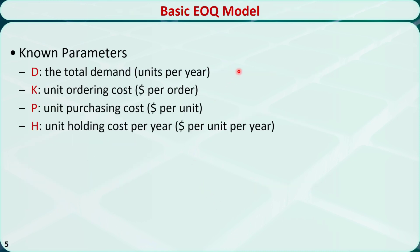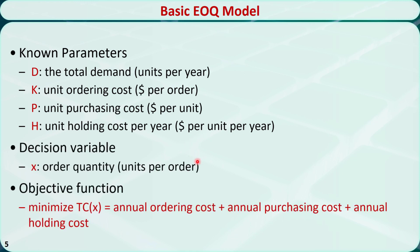In the basic EOQ model, we know the following parameters, represented by capital letters because they are all constant. D is the total demand, measured in units per year. K is the unit ordering cost, measured in dollars per order. P is the unit purchasing cost, measured in dollars per unit. The model determines the most economic order quantity, x, that minimizes the yearly sum of ordering cost, purchasing cost, and holding cost. The order quantity is measured in units per order, and the total cost is denoted TC, which is a function of x.